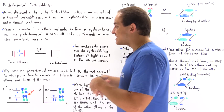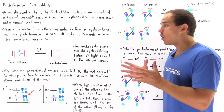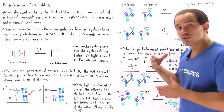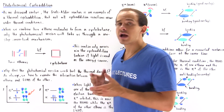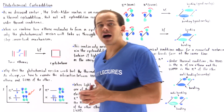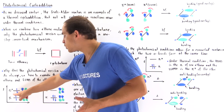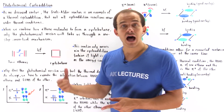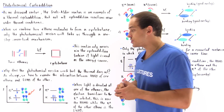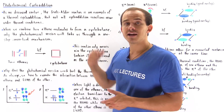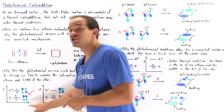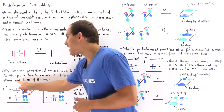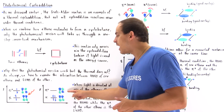Under photochemical conditions, we shine light onto one of our ethene molecules. The two electrons start in the lower-energy pi bonding molecular orbital. When we shine light of the right frequency, one electron transitions into the higher-energy orbital — our pi star. So now pi star is the highest occupied molecular orbital and the other orbital is the lowest unoccupied molecular orbital.